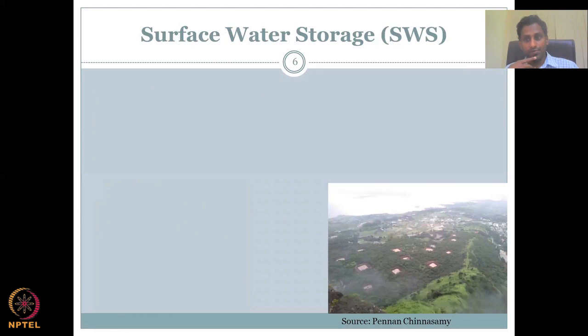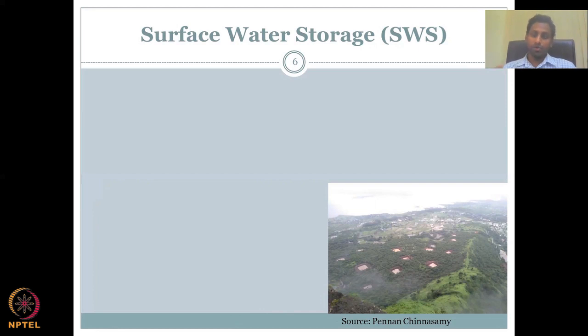We've defined precipitation as rainfall throughout the lecture — snow melt, hail, sleet, rainfall, everything is there. But for our focus, we're only looking at rainfall.